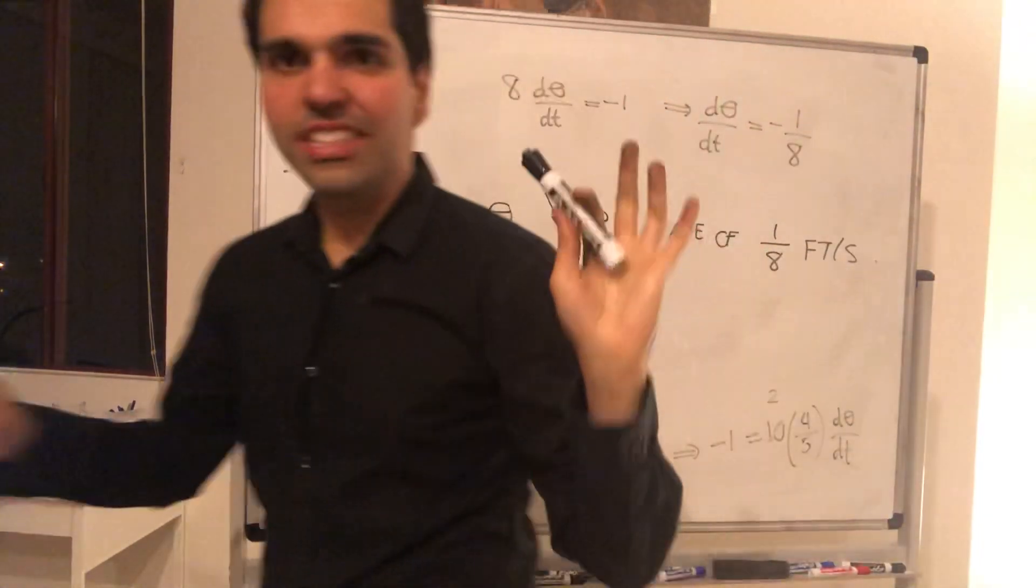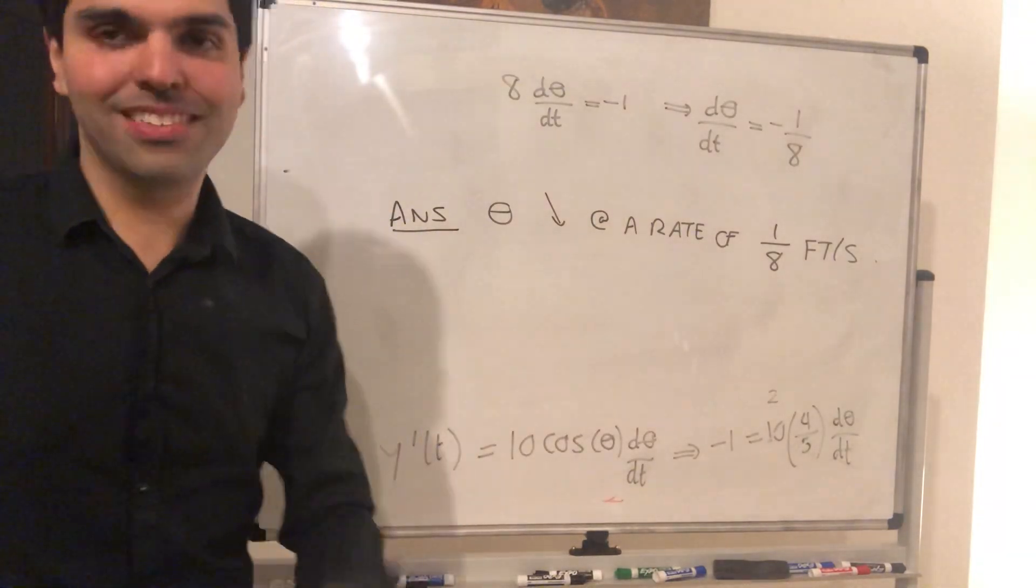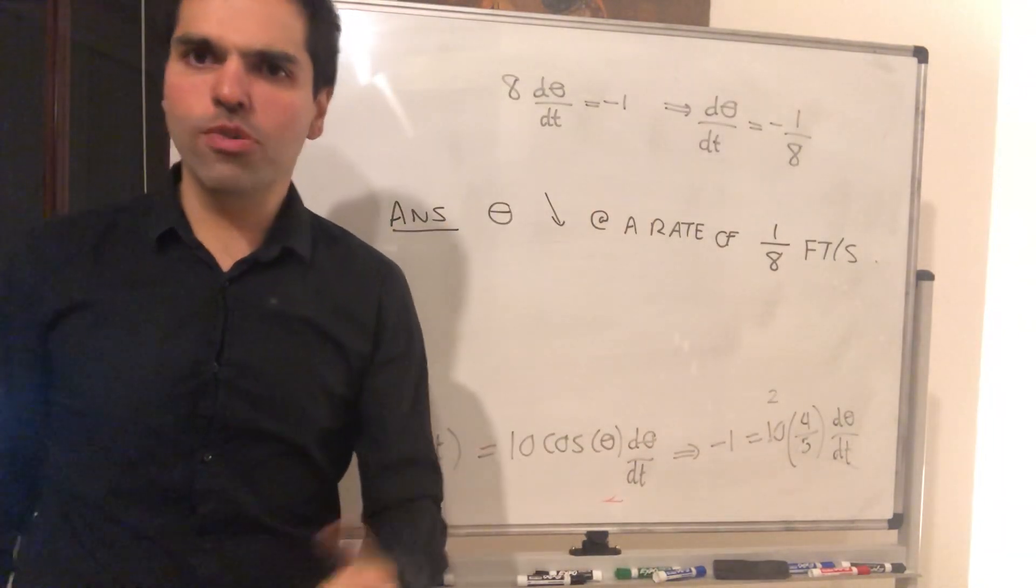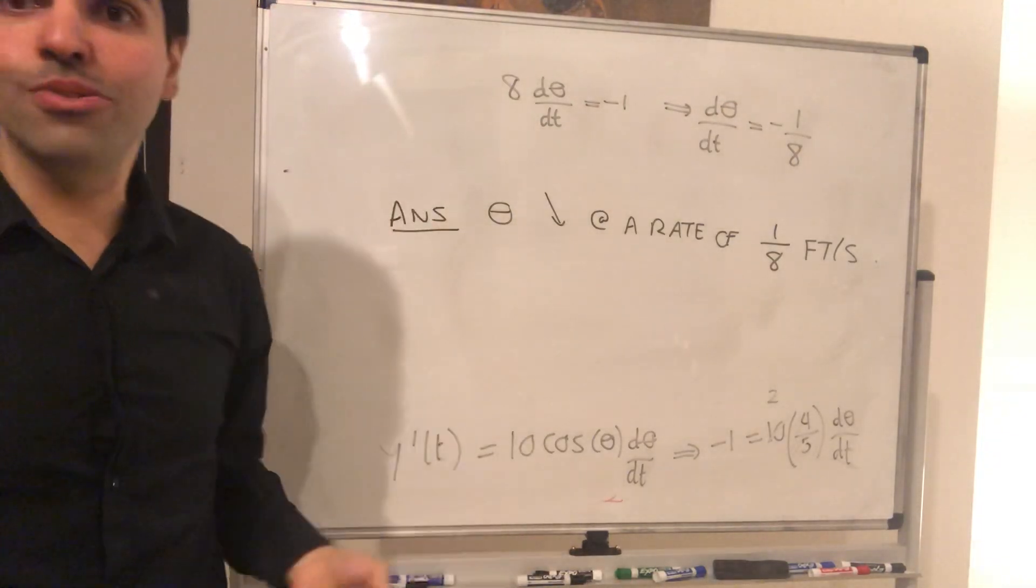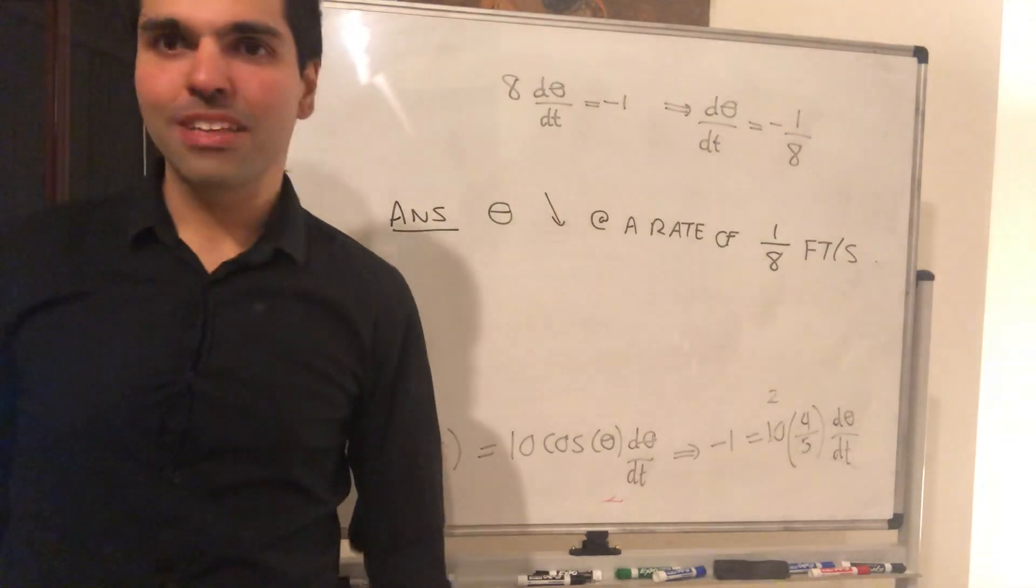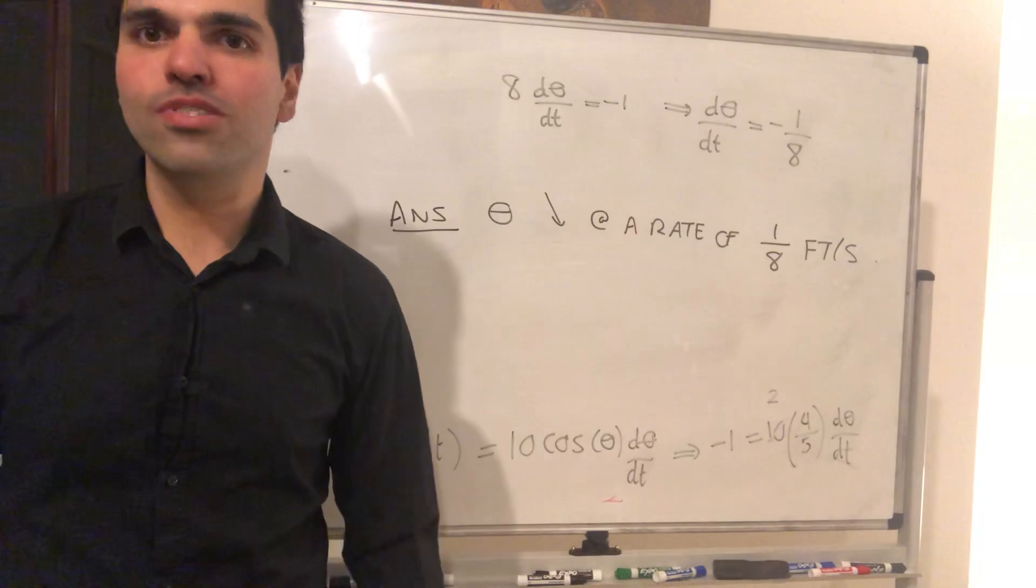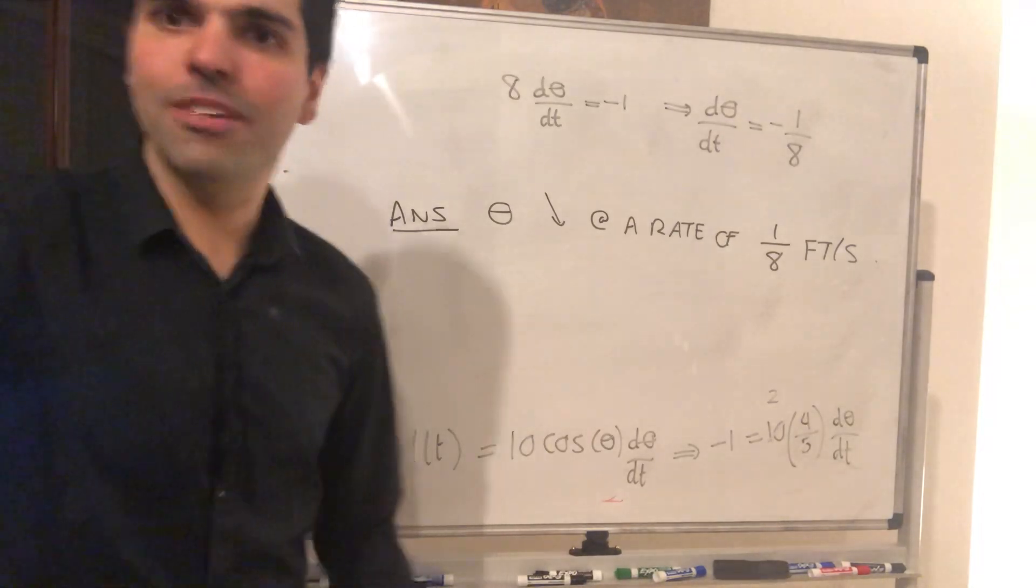So hopefully now you see a couple bag of tricks with related rates. One was the Pythagorean theorem in a previous video. And now you see also trig identities are also very useful. All right. I hope you like this. If you want to see more math, please make sure to subscribe to my channel. Thank you very much.